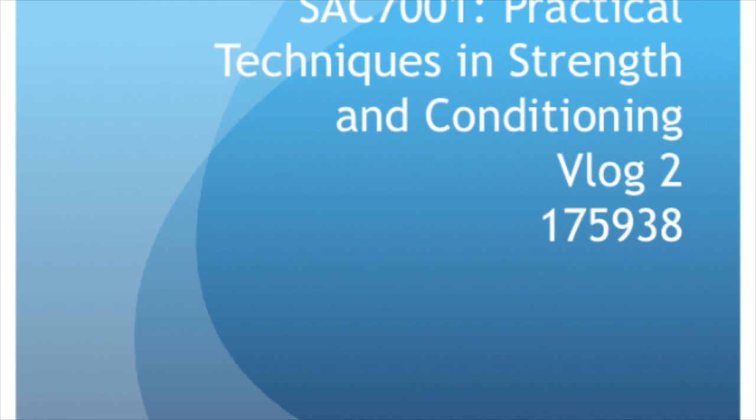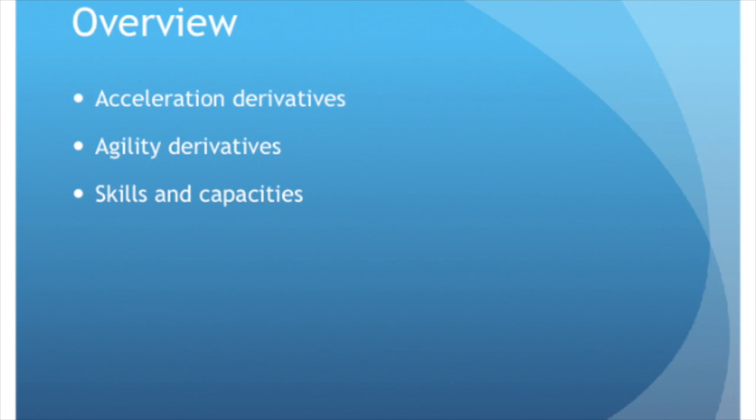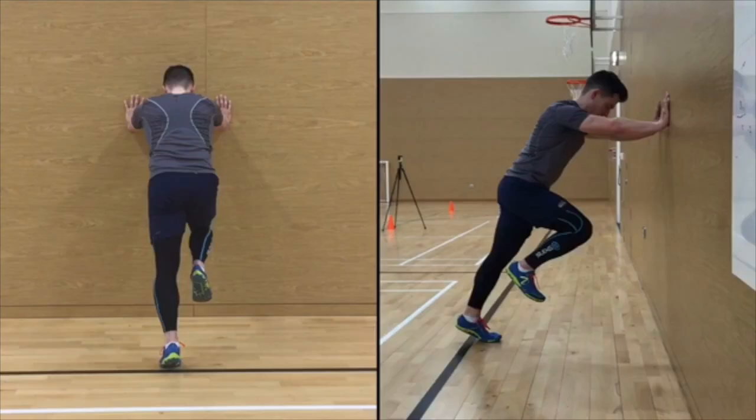This is vlog number two for the module Practical Techniques in Strength and Conditioning. The following vlog will discuss two athletes performing derivatives of acceleration and agility — specifically a wall drive, which helps the athlete generate force during the stance phase of acceleration, and deceleration, which is essential to decrease the athlete's velocity before they change direction laterally, horizontally, or vertically. The two athletes are from rugby and developmental American football and have not been exposed to this type of training before.